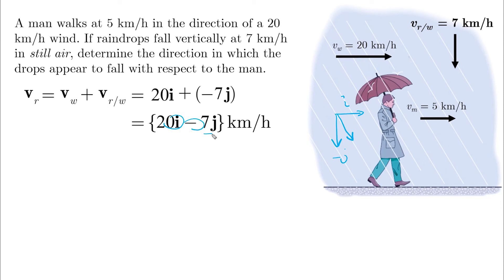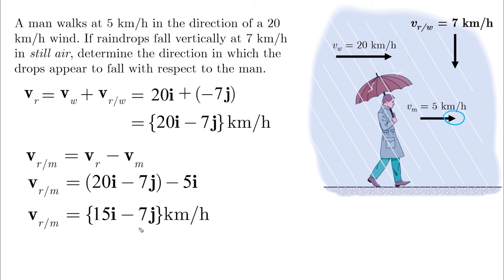And by finding Vr, we can combine it with Vm to find the velocity of R with respect to M, or the rain with respect to the man. So by substituting Vr, which is 20i minus 7j, and the velocity of the man, which is 5i, we end up with Vr relative to M equals 15i minus 7j.